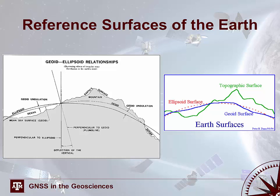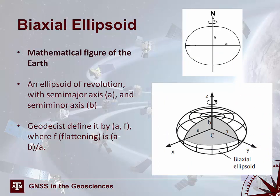Notice that there are differences in where the ellipsoid, geoid, and topographic surfaces have their origins or centers and how complex each of the surfaces is. The origin, complexity, and other properties of each of these three surfaces have important implications for determining the location of a point on Earth's surface. The simplest model of the Earth is a biaxial ellipsoid — a mathematically smooth figure of the Earth. Because the Earth is not perfectly spherical, the ellipsoid has a semi-major axis and a semi-minor axis. The ellipsoid itself is defined by the semi-major axis and a flattening parameter, which is computed from the semi-major and semi-minor axes.